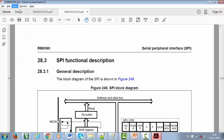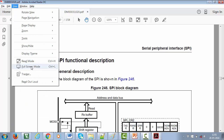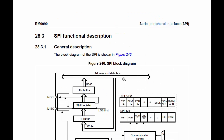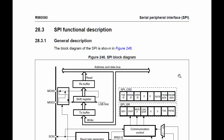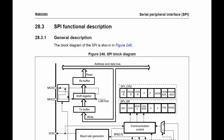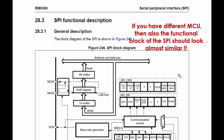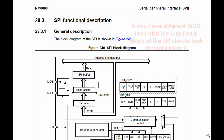Now let's understand the functional block of the SPI peripheral in a microcontroller. Let's go to the reference manual of our microcontroller and browse through the SPI section. This section describes the functional block of the SPI hardware. If you have a different microcontroller, the functional block looks almost similar, so if you can understand this, you can understand the functional block of your microcontroller too.